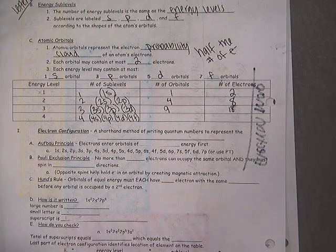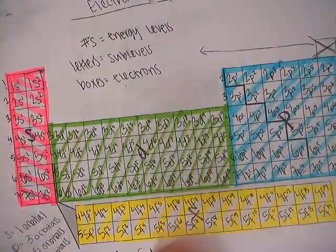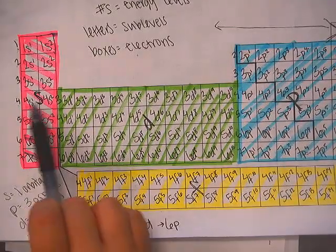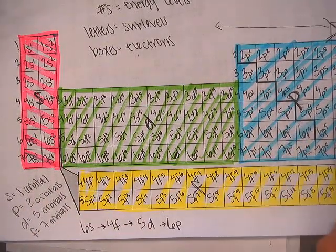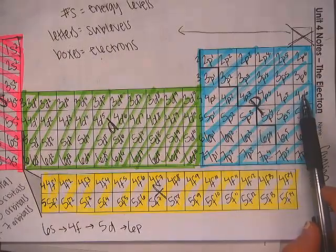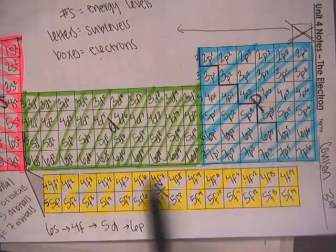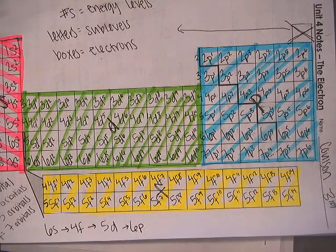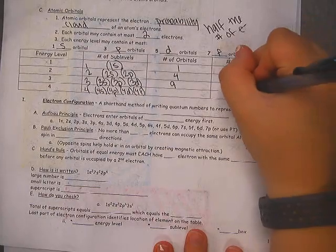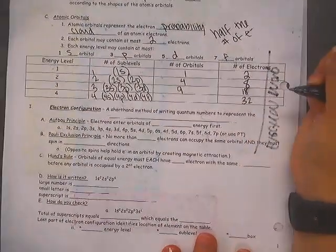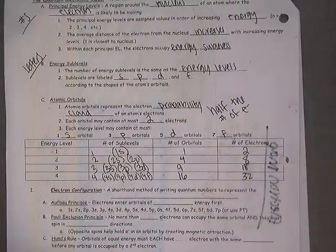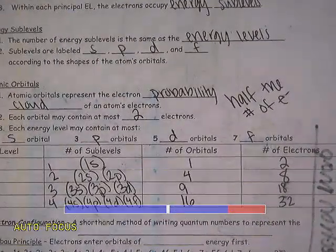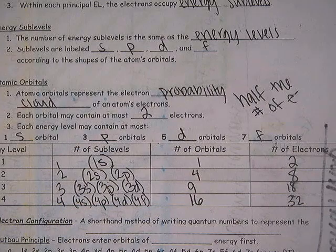For energy level 4, you're counting anything with a big number 4: 2 plus 10 is 12, plus 6 is 18, plus 14 — that's 32 electrons. So if I have 32 electrons, how many orbitals do I need? 16. Perfect. Zoom that in so you can see it better, and we'll stop there.